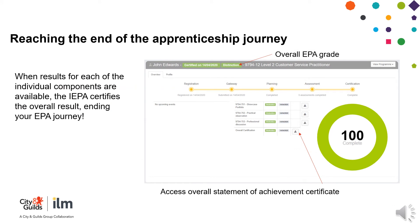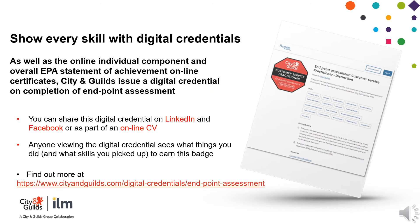Reaching the End of an Apprenticeship Journey. When results for each of the individual components are available, the EPA certifies the overall result, ending your EPA journey. Show every skill with digital credentials. As well as the online individual component and overall EPA Statement of Achievement online certificates, City and Guilds issue a digital credential on completion of Endpoint Assessment. To find out more information, visit our website.